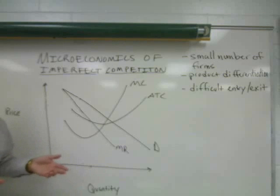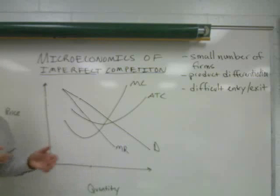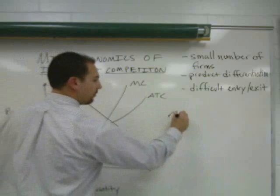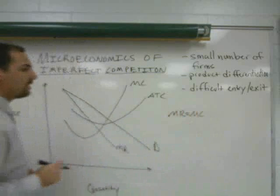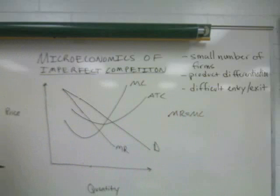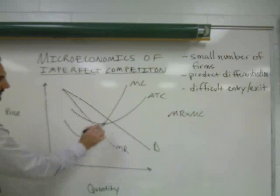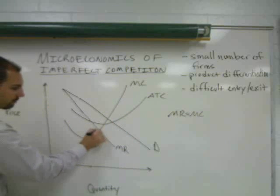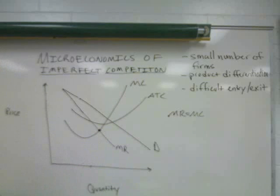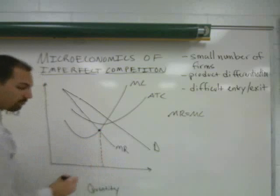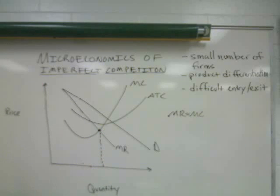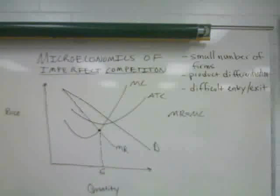Now we get to the equilibrium point, or the profit maximizing point, for all imperfectly competitive firms. The rule is always the same: the profit maximizing rule is marginal revenue equals marginal cost. That will give us the profit maximizing quantity the firm should produce. Here we have our marginal revenue curve and our marginal cost curve. We go to the point at which they intersect, and that gives us our profit maximizing quantity — let's call it six units.